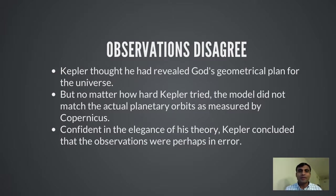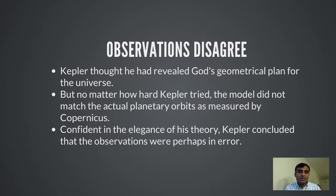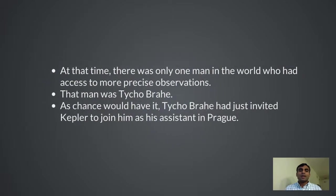Kepler was very confident in his theory — it looked very elegant to him — so he felt that maybe the observations were incorrect. In science, there are only two possibilities: either your observations are incorrect and your theory is right, or — more often the case — the observation is correct and your theory needs to be modified. At that time, there was only one man in the world who had access to better observations, and that man was Tycho Brahe.